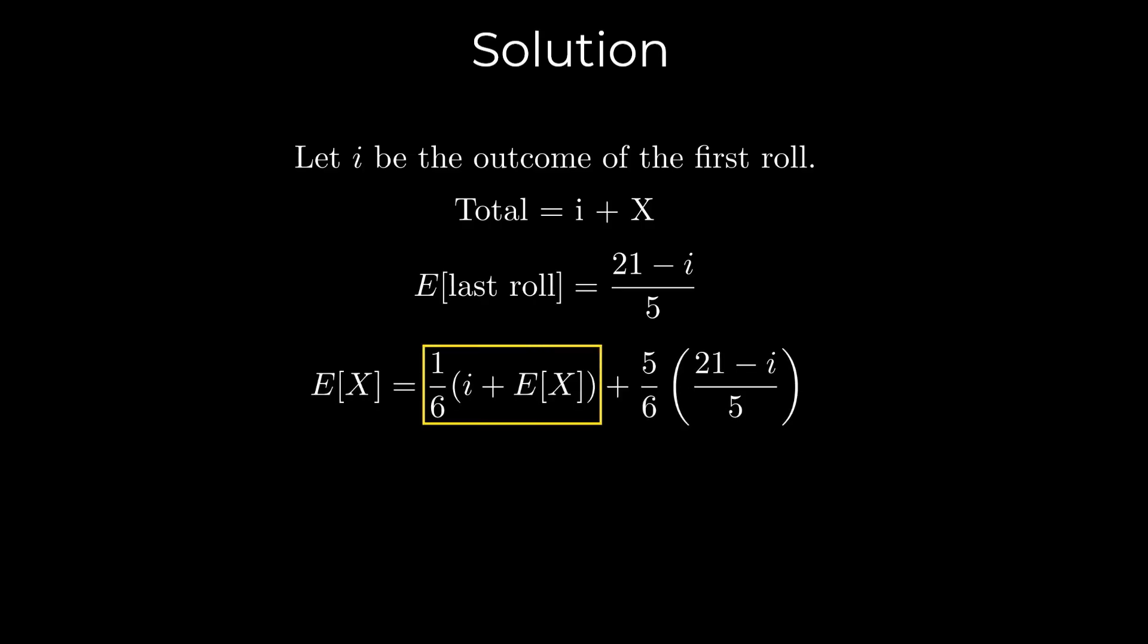The first term represents the case where we get the value i again. This happens with a probability 1/6. The plus i represents the value rolled on the current roll. The second term represents the case where we roll a value different from i and stop. This happens with a probability 5/6.